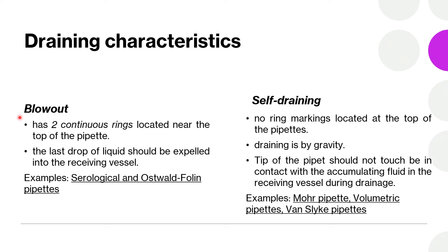Under draining characteristics, we have two types: blowout and self-draining. For blowout pipettes, they must have two continuous rings located near the top of the pipette where we attach the safety bulb. The last drop of liquid must be expelled into the receiving vessel through blowing out using the pipette bulb.